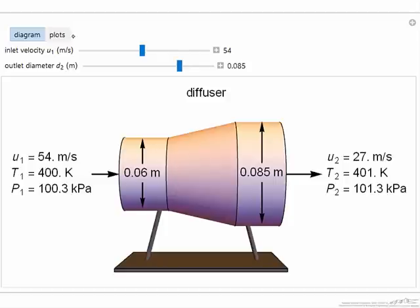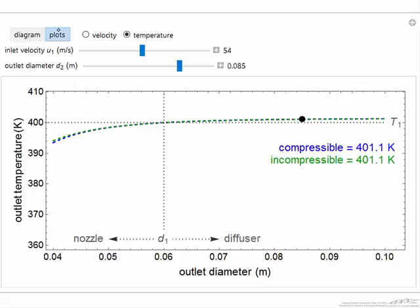We can also look at plots. The dot shows where we are in the system, in the plot. In other words, as I change the outlet diameter, I move from the case where we have a diffuser to the case where we have a nozzle.